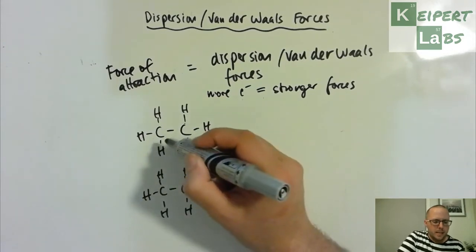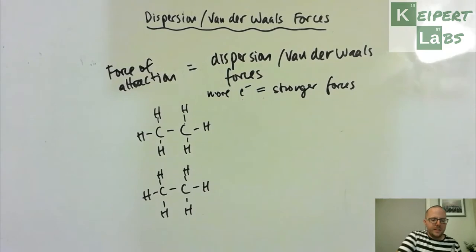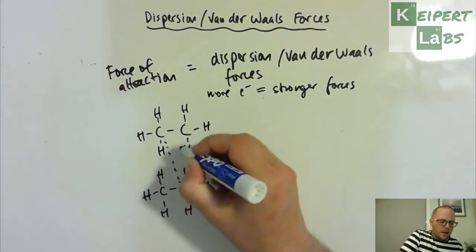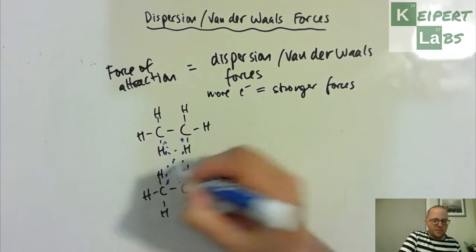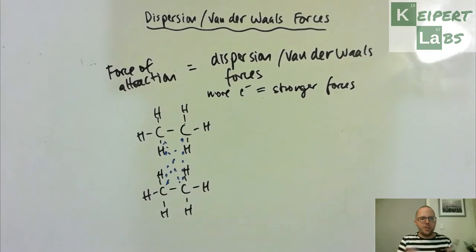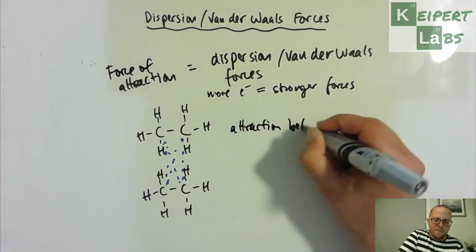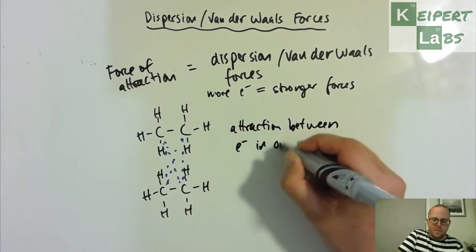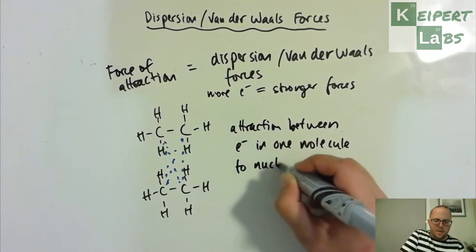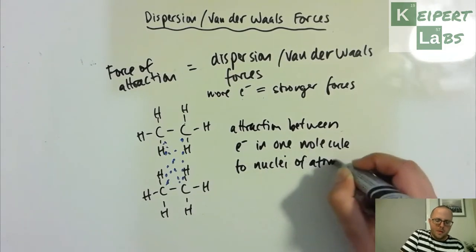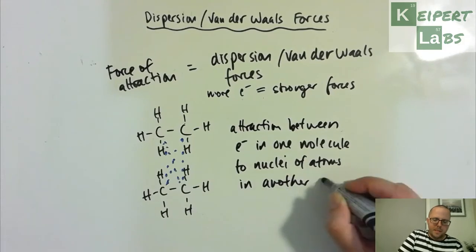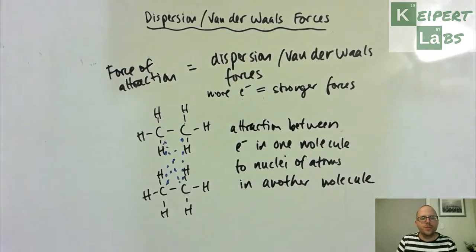What we are getting is these attraction forces that exist between atoms in these different molecules. We're getting all these different particular spots where the electrons might shift, so you're getting attractions between electrons in one molecule to the nuclei of atoms in another molecule.